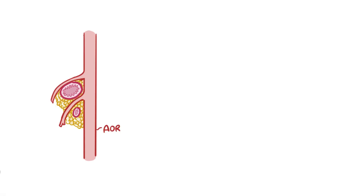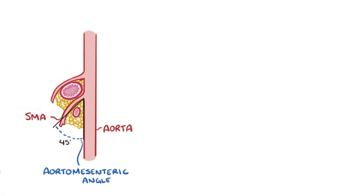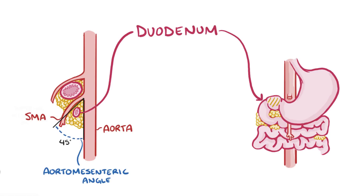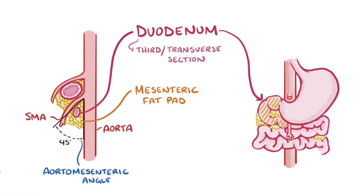Usually the angle between the aorta and the superior mesenteric artery as it branches off — the aorto-mesenteric angle — is around 45 degrees. It turns out that the duodenum, which is the C-shaped first section of the small intestines, passes through this little archway. More specifically, it's the third or transverse section of the duodenum, and as it passes through, it's cushioned by the mesenteric fat pad, which is a collection of fat that protects the duodenum from getting crushed by the two arteries.